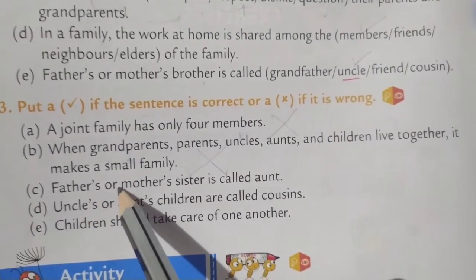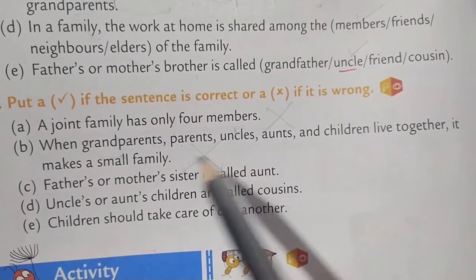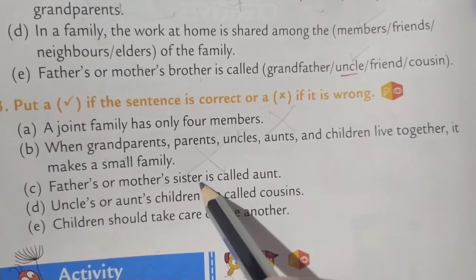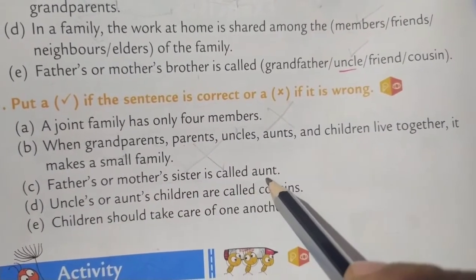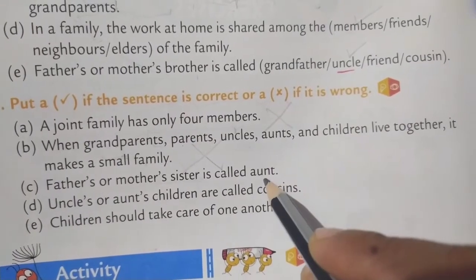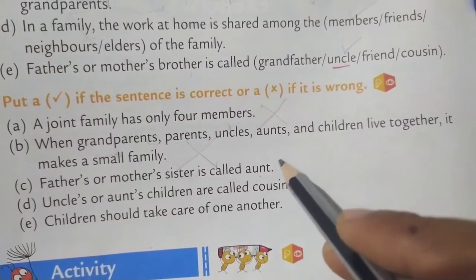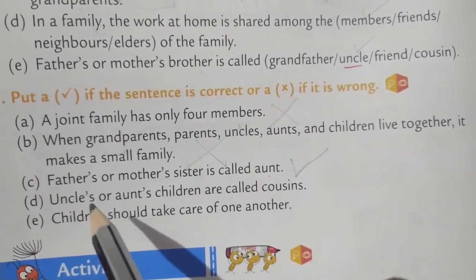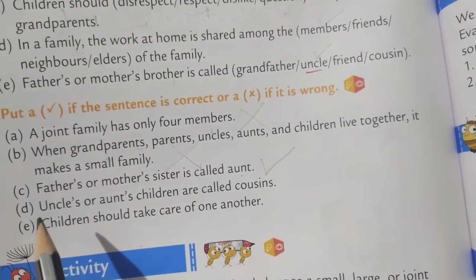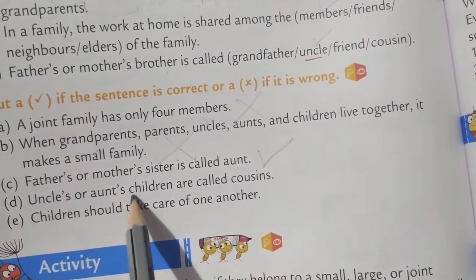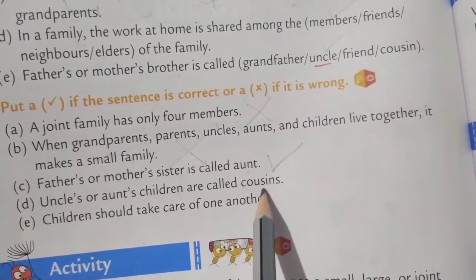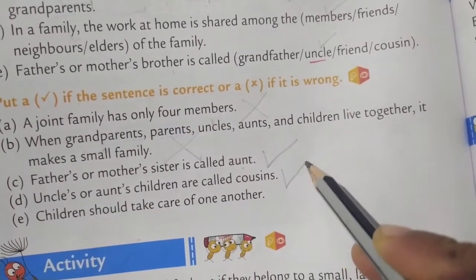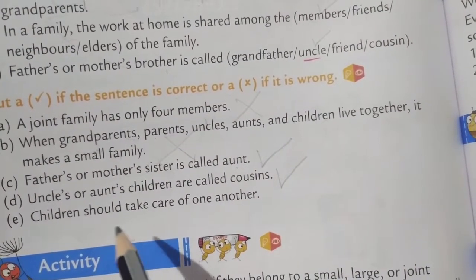Then: 'Father's or mother's sister is called aunt.' Father's or mother's sister is called aunt. Very good, it is right — put tick. Then D: 'Uncles or aunts' children are called cousins.' Uncles or aunts' children are called cousins. So it is right.